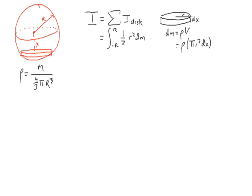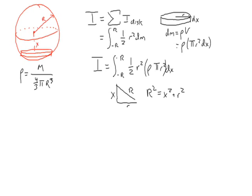We can substitute for dm in the integral now, and we get the new integral: I is integral from negative r to r of one-half r squared rho pi r squared dx. However, r and x are related by geometry. Looking at a right triangle, we can see that it has big r as the hypotenuse, and x and little r as the legs. So by the Pythagorean theorem, big r squared equals x squared plus little r squared. We can solve for little r: little r squared equals big r squared minus x squared.